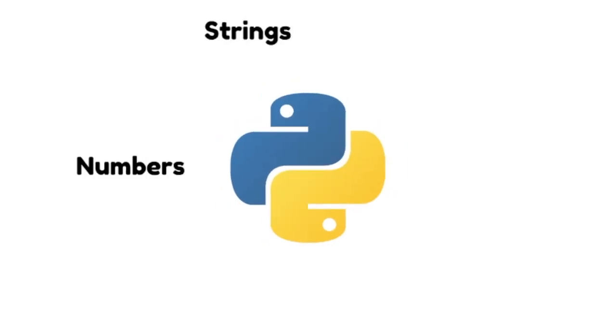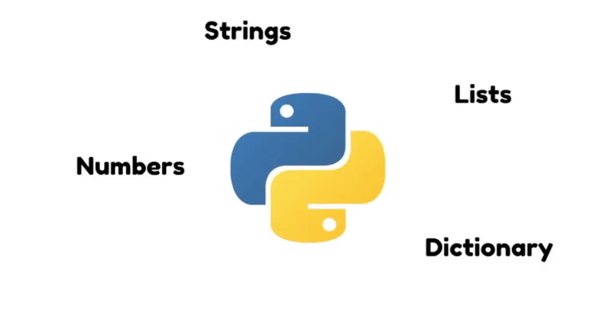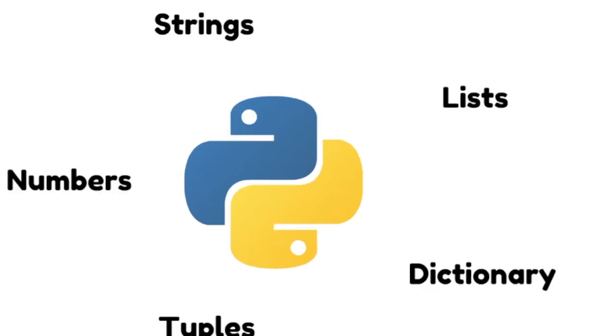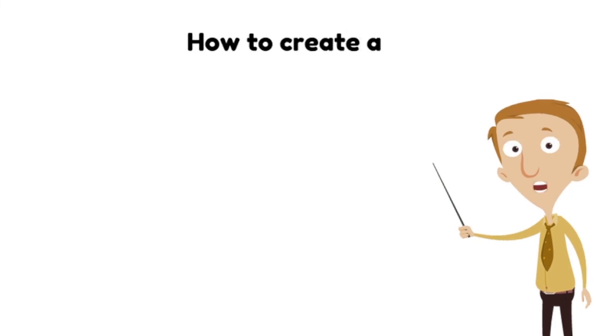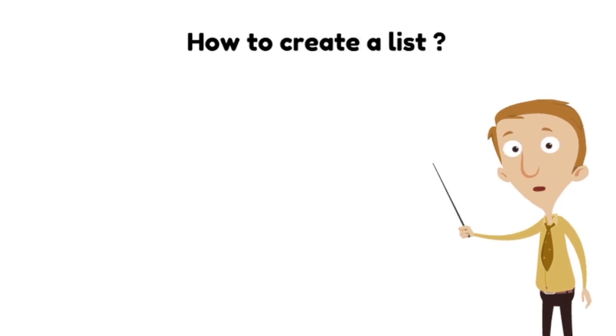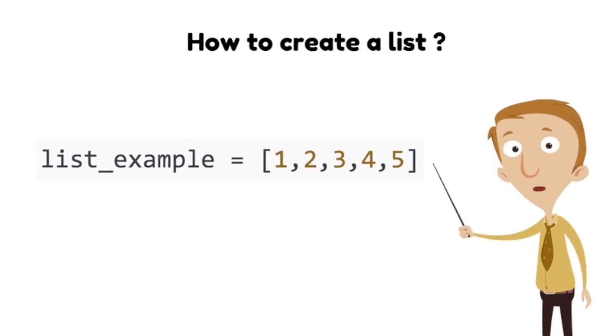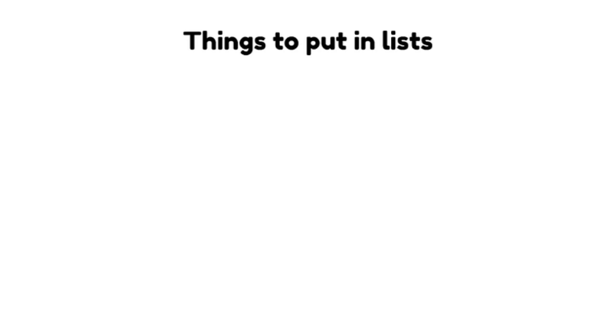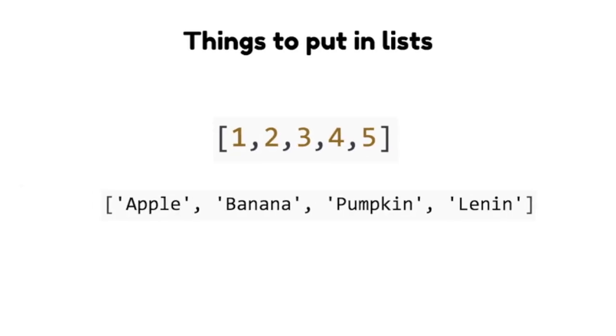Python has a wide range of data types. One of the most commonly used data types is list. To create a list, place all the items you want inside square brackets separated by commas. Lists can contain anything — any number of items — and they can be of different types.